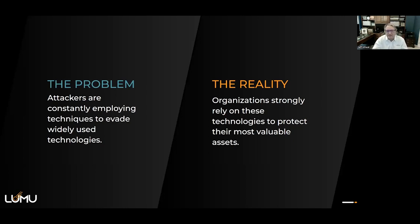The big problem everyone has right now is attackers are constantly employing techniques to evade using technologies, and they're moving at machine speed. For example, during the 75 incident responses in 45 days based on Hafnium — Microsoft put out a CVE on Exchange, and the Russian business networks went and reverse-engineered that Exchange so they could get in through it and put in a backdoor before patching. So even if someone patched, they could still get through after you patch. That's how quickly they move and how professional they are.